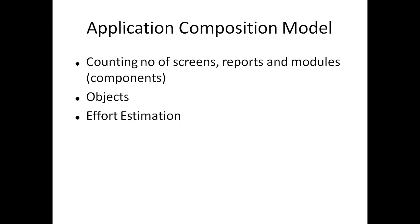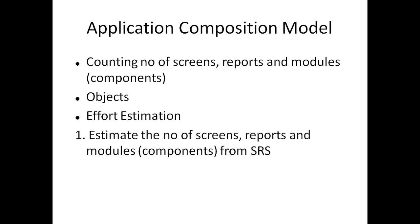We will describe the steps in effort estimation for the Application Composition Model. In the first step, we estimate the number of screens, reports, and modules from the SRS document. We analyze the SRS document and determine these counts. In the second step, we determine the complexity level of each screen and report, and rate it according to three scales: simple, medium, and difficult. The complexity of reports and modules is also calculated, as shown in the next slide.